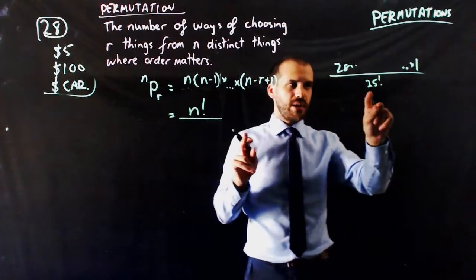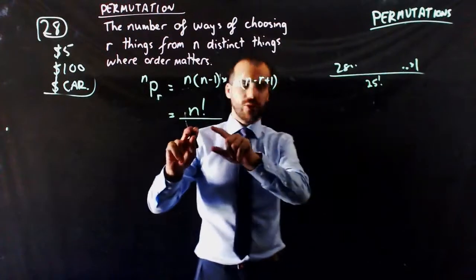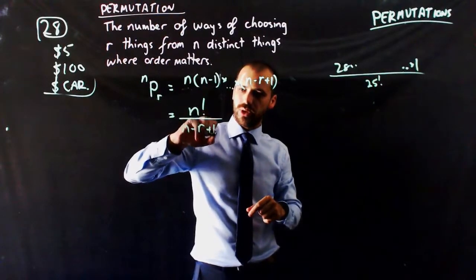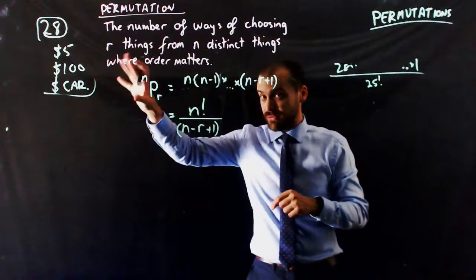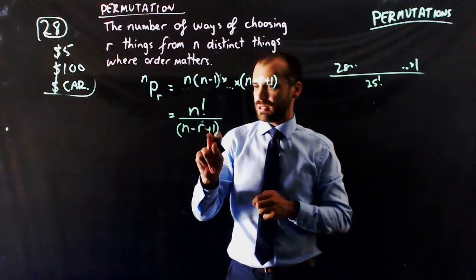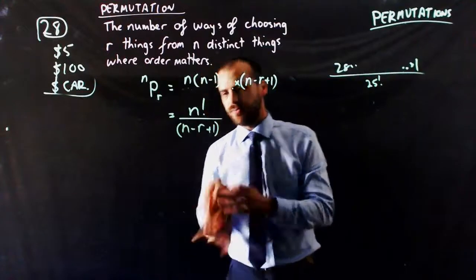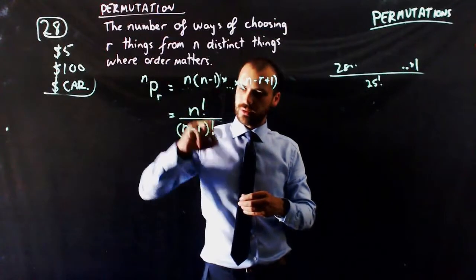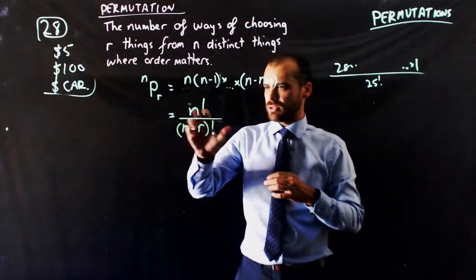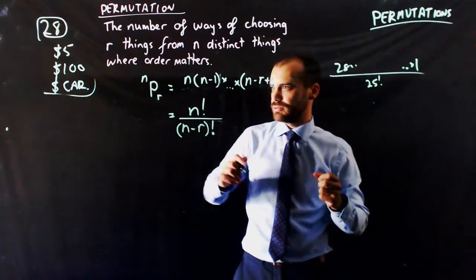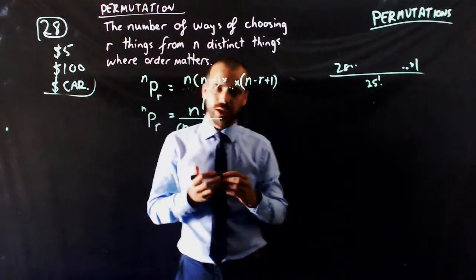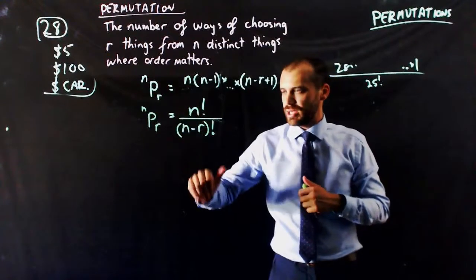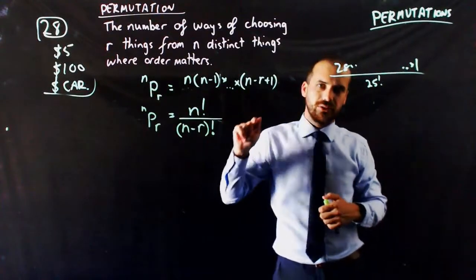In order to come up with the number 25, on the bottom here, 25 is the same as n minus r plus 1. That's, in this specific instance, 28 minus 3, which is 25 plus 1. Actually, we don't need the plus 1. If we just do n minus r, we have a good formula. 28 factorial over 25 factorial. So, that is your golden formula. If you want to know the number of ways of choosing r things from n distinct things, where order matters, nPr equals n factorial over n minus r factorial.